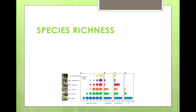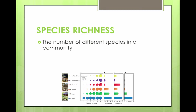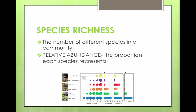The more diverse a community is, the more healthy and stable the community is. Species richness is the number of different species in a community. Relative abundance refers to the proportion each species represents of all the individuals in the community — the more evenly distributed the species, the better.